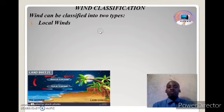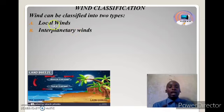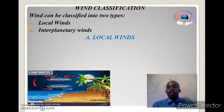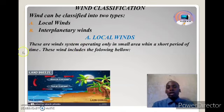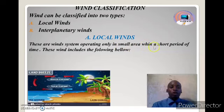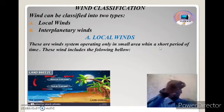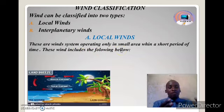Wind can be classified into two bases. The first base is local winds and the second one we have interplanetary winds. Local winds are winds that operate only in a small area within a short period of time. So be careful — we are going to analyze each and everything about these winds.